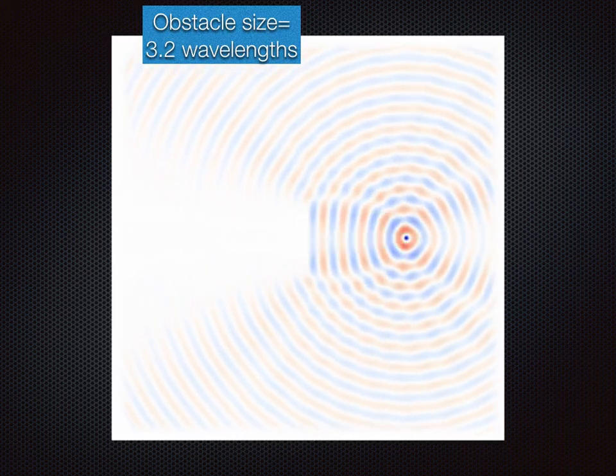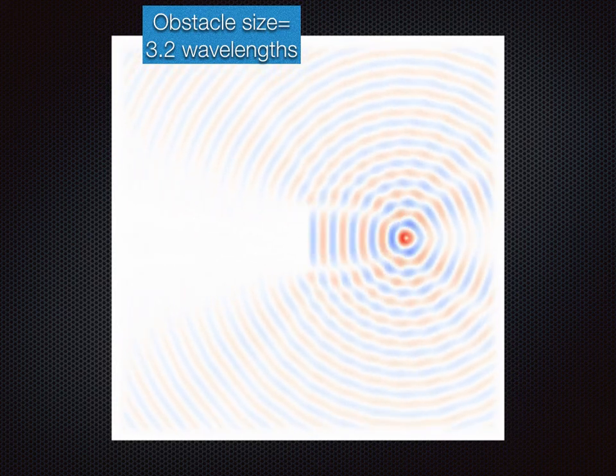At 3.2 wavelengths, we observe that there is little diffraction while the linear propagation starts to become more apparent.